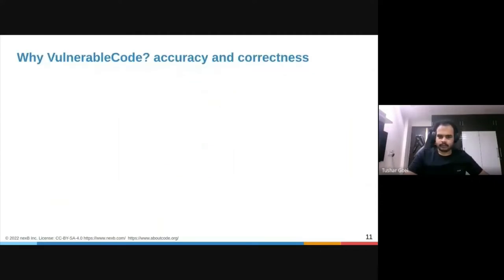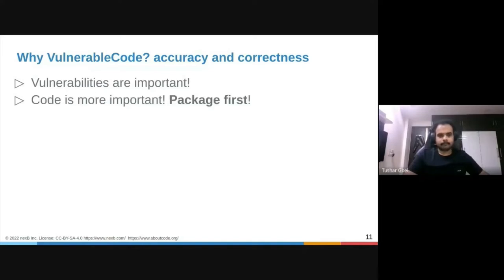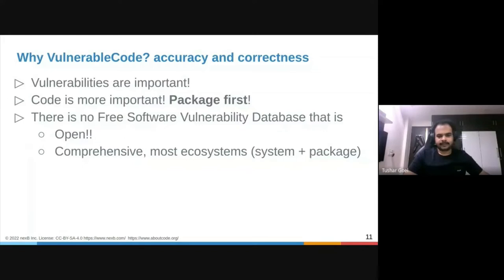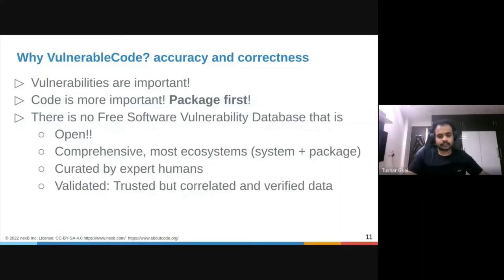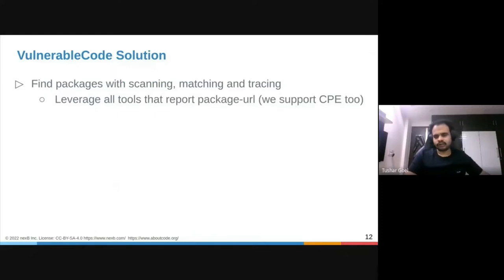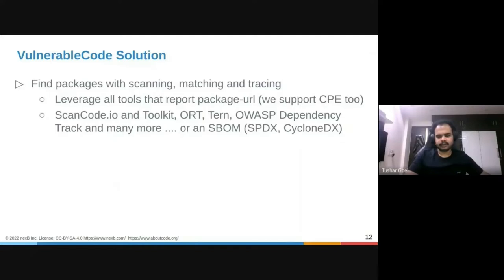Why VulnerableCode? We are accurate and correct. Vulnerabilities are important, but code is more important — you need to be package-first. There is no free software vulnerability database that is open. Most solutions we find are proprietary or closed source. It should be comprehensive, covering most ecosystems, created by expert humans, validated, and most importantly working towards correctness. We leverage all tools that report Package URL and we also support CPEs.